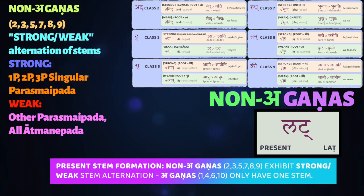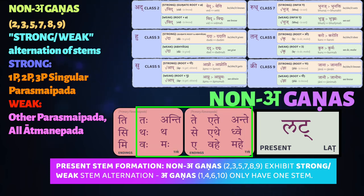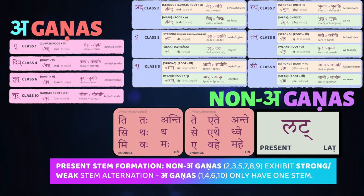These non-a-gaṇa classes exhibit what's called the strong-weak alternation of stems. This means that for each of the non-a-gaṇa roots, there are going to be two different stems. One is the strong stem and the other is the weak stem. Which one you use depends on which ending you're using. The strong stems are used only for three endings: the first person singular, second person singular, and third person singular in the parasmaipada paradigm — ti, si, and mi. All the other endings, including the entirety of the ātmanepada paradigm, use only the weak stems. This strong-weak alternation only occurs in the non-a-gaṇa classes 2, 3, 5, 7, 8, and 9. The a-gaṇas will only have one stem, used throughout all the paradigms.